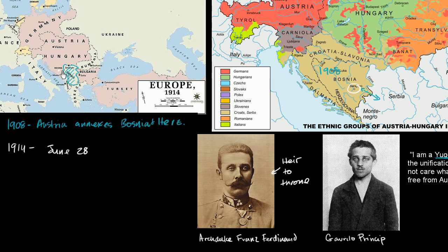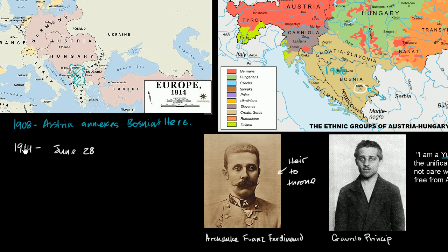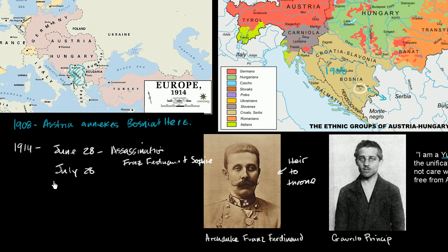Austria-Hungary was eager to deal with this situation, and they did not find Serbia's acceptance of guilt acceptable. So on July 28th, Austria-Hungary declared war on Serbia.